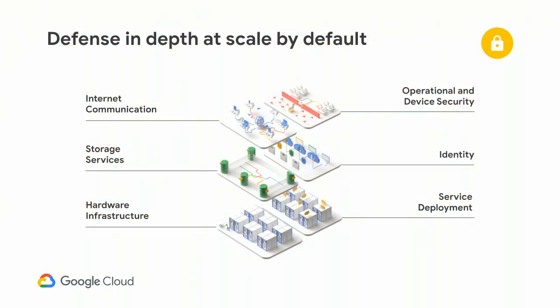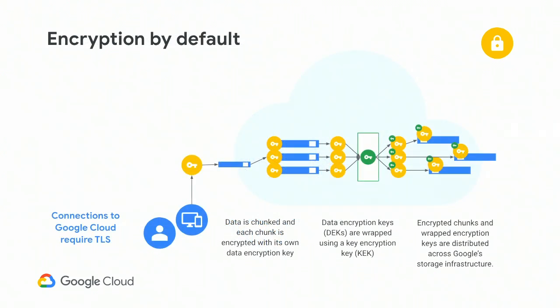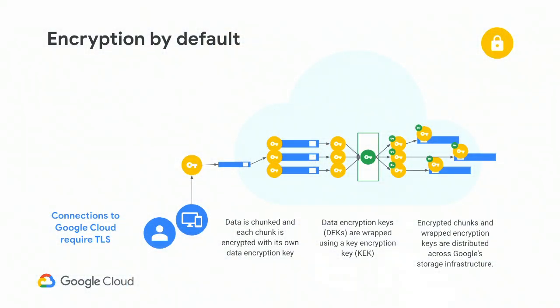Technical safeguards: we have encryption by default at rest. What I mean by default is customers don't have to check a box that says turn on default encryption, don't have to say what size keys they want, what level of encryption, or what data stores are in scope. Data at rest on Google Cloud Platform is encrypted. A file coming into Google Cloud is broken into multiple pieces; each piece is encrypted with its own key. Then we wrap that key with a key encryption key so that we don't store keys in plain text.